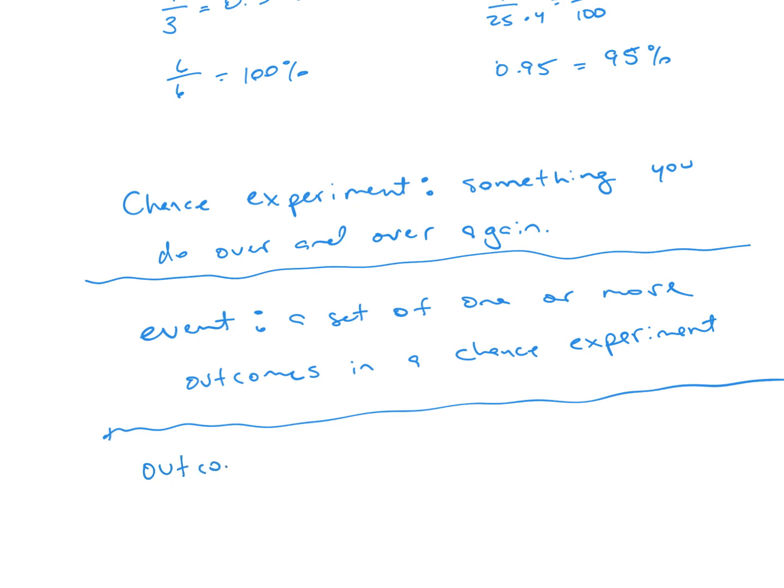And then last but not least is your outcome. Okay, this is one of the things that can happen. So, for example, if you're flipping a coin, the outcomes could be head or tail, right? So, what is a possibility of happening?